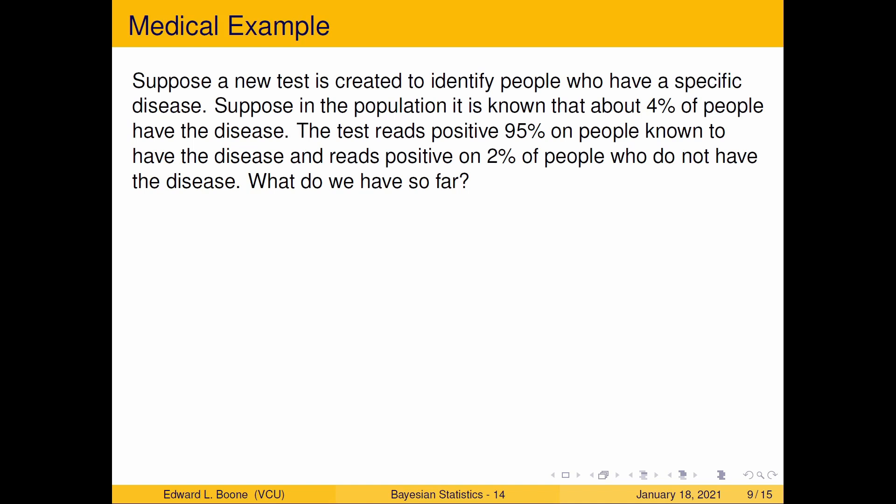All right, so let's look at a quick example here. This is the most common type of example because it only requires two groups in it to make this happen. So we're only going to look at this one. Our next example in the next video is considerably more complicated. So suppose a new test is created to identify people who have a specific disease. Suppose in the population it is known that about 4% of the people have the disease. The test reads positive 95% on people known to have the disease and reads positive on 2% of people who are known not to have the disease. So here we have a lot of information. Now if I'm a physician, this might be enough information. Well, let's see what we have.